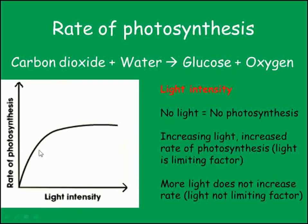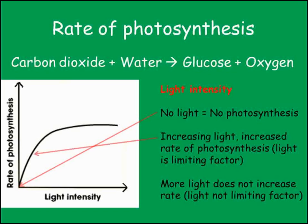Looking at how light intensity affects the rate of photosynthesis, we get a similar shaped graph. No light at all means no photosynthesis. This is why at night the guard cells close the stomata to reduce water loss, when there is no point in allowing carbon dioxide into the leaf when there is no photosynthesis taking place. Increasing the light intensity increases the rate of photosynthesis until something else becomes the limiting factor, beyond which increasing light intensity has no further effect.